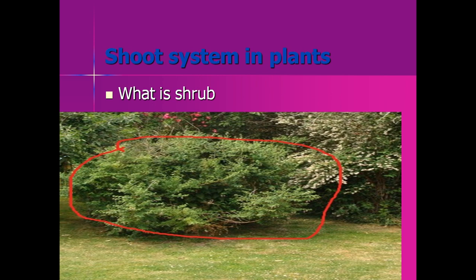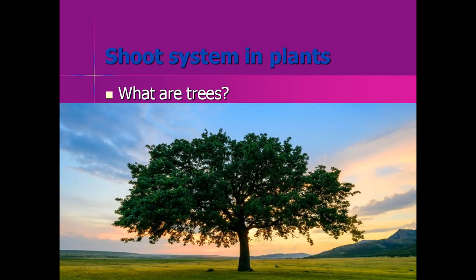If the stem remains short with lots of branches, it is called a shrub. Trees are plants with thick stems. This is the end of the first lecture of Unit 2. Thank you.